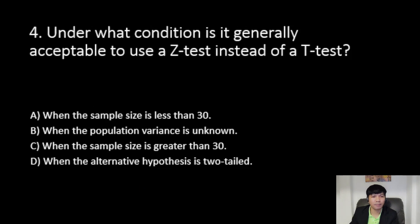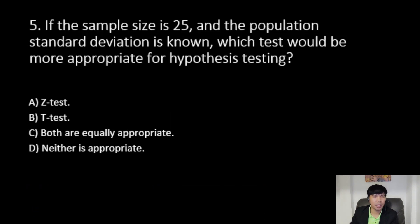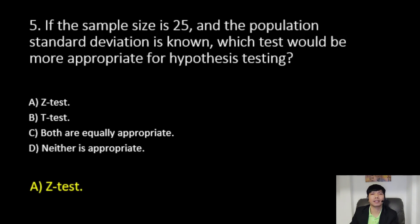Number four: under what condition is it generally acceptable to use a Z-test instead of a T-test? The answer is letter C: when the sample size is greater than 30. Number five: the sample size is 25 and the population standard deviation is known — which test would be more appropriate for hypothesis testing? The answer is the Z-test.